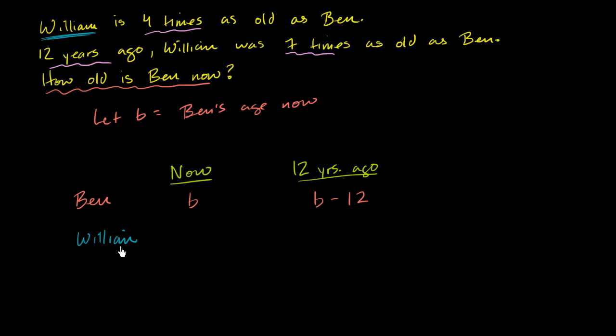Fair enough. Now, what is William's age today? Well, this first sentence gave us the information. William is four times as old as Ben. And we can assume that they're talking about today. So if Ben is b, William is going to be four b.